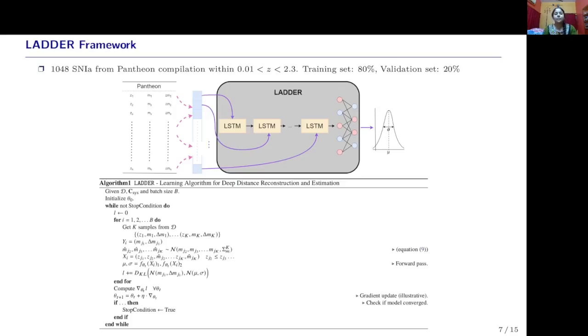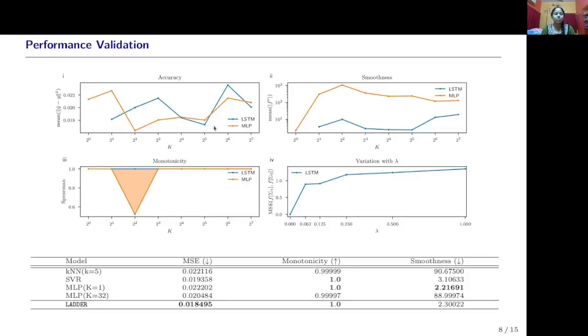After rigorous training and validation exercises, we found that the network model which performed best were LSTMs. To train LADDER on Pantheon, it is now important to validate LADDER, given that we are trying to reconstruct a valid physical model from it. Because we are trying to reconstruct the cosmic distances or here the luminosity distances, we should remember that it should be a continuous smooth function and monotonically increasing in nature. We will test LADDER based on a few metrics: accuracy, which is determined by the mean square error, the smoothness coefficient, and the monotonicity determined by the Spearman rank coefficient.